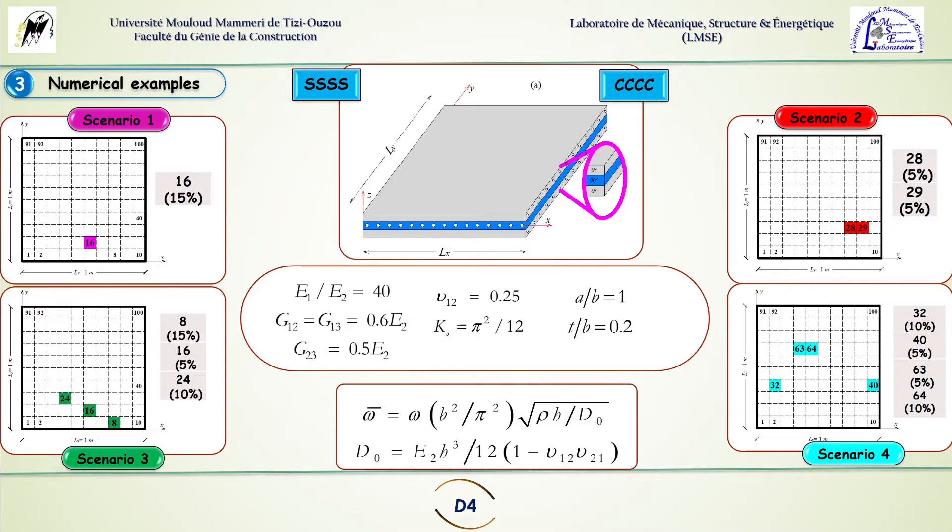In the first scenario we have only one damage located at the edge of the plate. In the second scenario we have two damages that are near each other also near the corner of the plate. In the third scenario we have three damages near the edge and then in the last scenario we have four damages distributed across the plate.